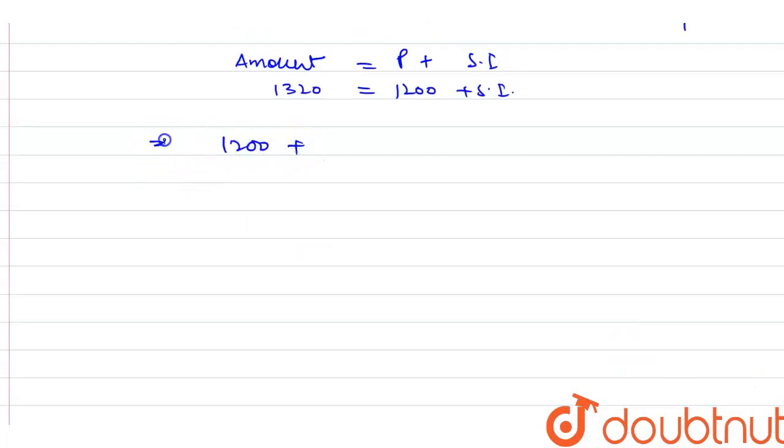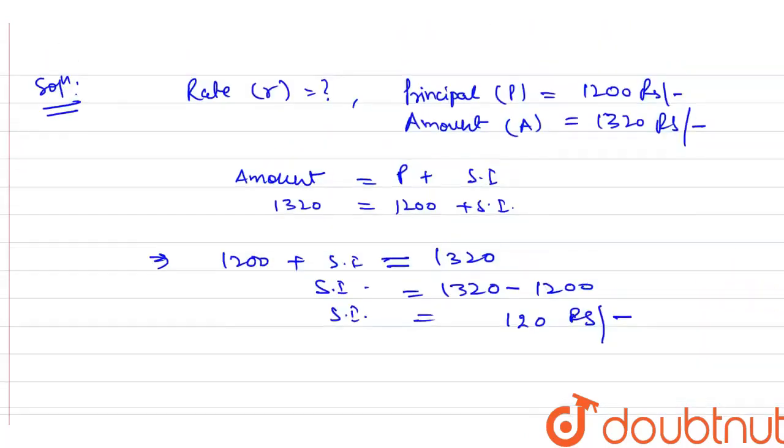We can write 1200 plus SI equals 1320. Now simple interest will be equal to 1320 minus 1200 rupees. So 0 minus 0 is 0, 2 minus 0 is 2, 3 minus 2 is 1, 1 minus 1 is 0, means simple interest will be 120 rupees.